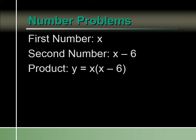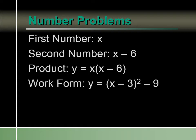The product is going to be the first number times the second number, so we get x times x minus 6. We're going to go ahead and put that into work form. The first thing we have to do is distribute our x: x times x is x squared, and x times negative 6 is negative 6x.